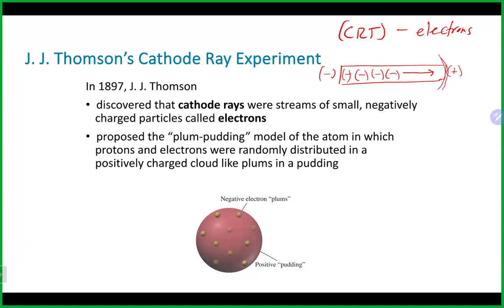At the end of the tube they placed a material that would fluoresce so you could see where the beam was hitting. You might be familiar with cathode ray tubes from older TVs — the ones with big backs that you'd call a repairman to fix. Those are cathode ray tubes with picture tubes inside. Older computer monitors with a big back were also CRT monitors.